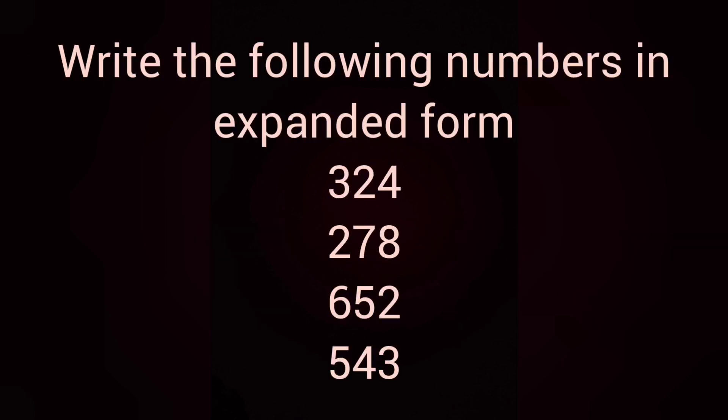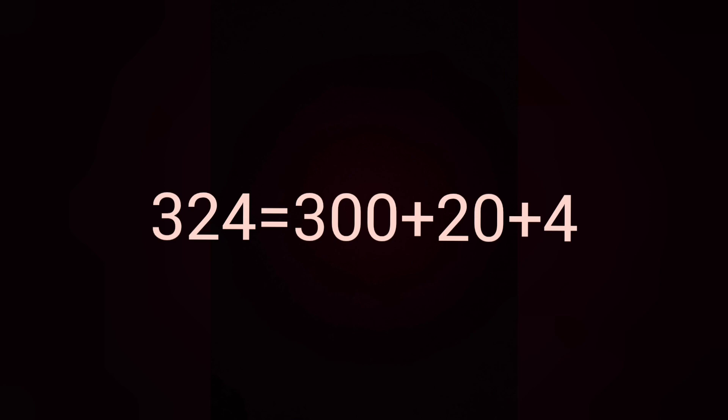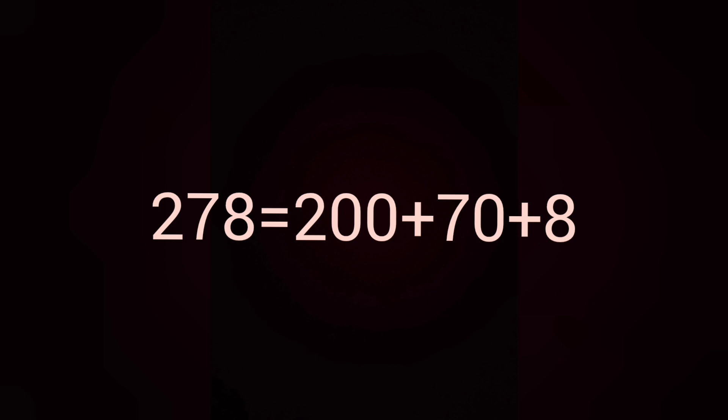Next, write the following numbers in expanded form. First number is 324. Expanded form of 324 is 300 plus 20 plus 4. Next, number 278. The expanded form of 278 is 200 plus 70 plus 8.